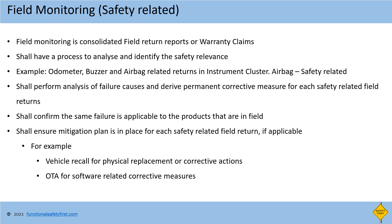Field monitoring of safety related items: field monitoring assumes the product is launched and now available in the end user's hands. The end user will raise any failure in the product to dealers, and dealers will raise it to the manufacturers as a warranty claim. These failures are consolidated as field return reports. Out of these failures, how many are safety related and what is the status of those failures must be ensured. Field monitoring shall have a process in place to analyze and identify the safety relevance. For example, taking instrument cluster with three field returns: the first return is related to odometer, the second is related to buzzer, and the third is related to airbag indication issue. Out of these three, airbag is the safety related feature and shall be brought under functional safety radar for analysis and corrective measures.